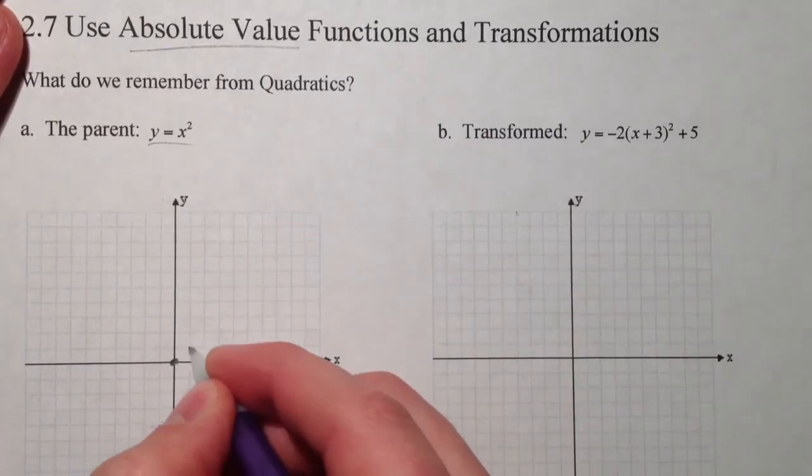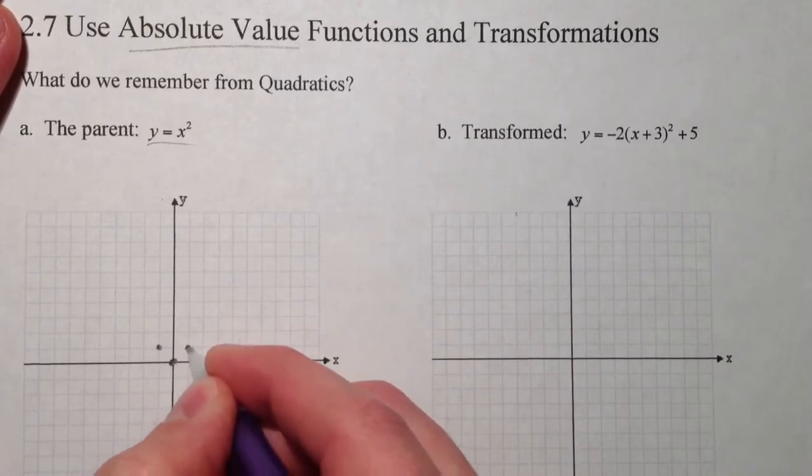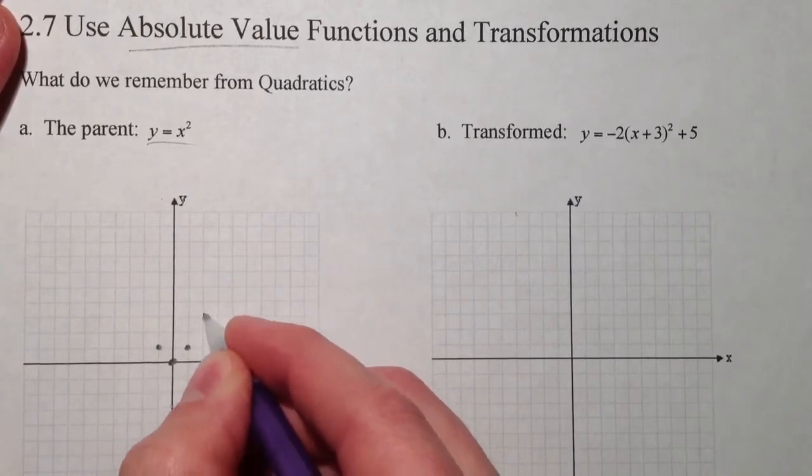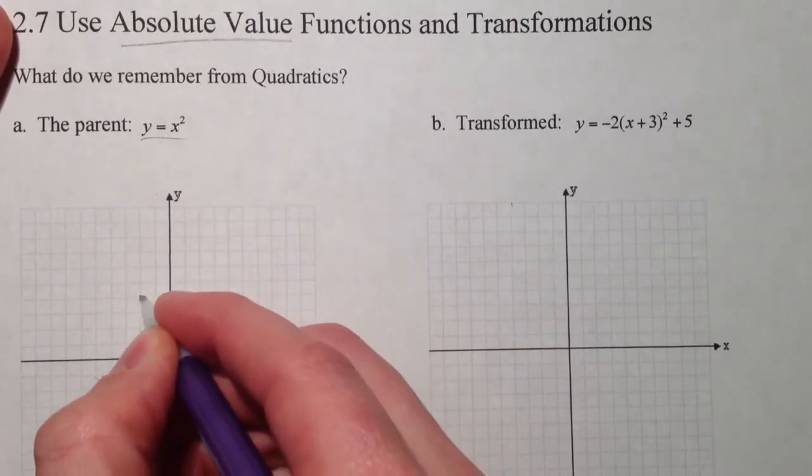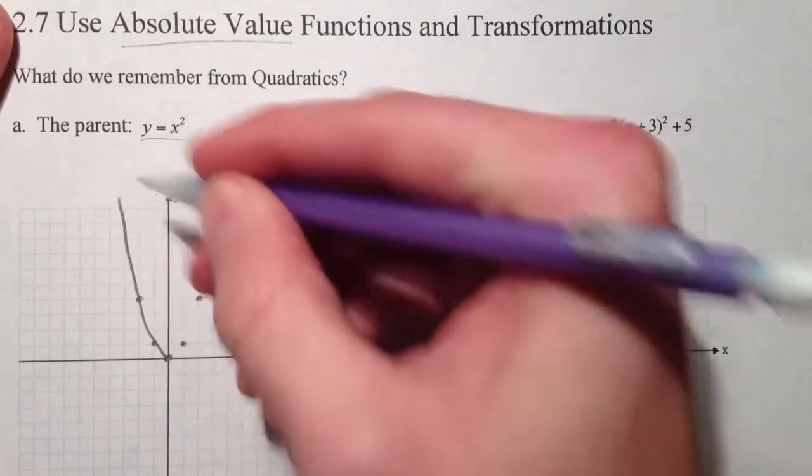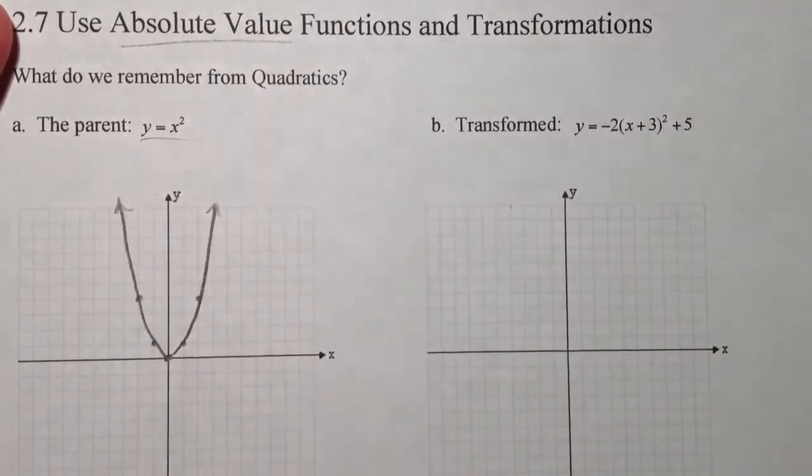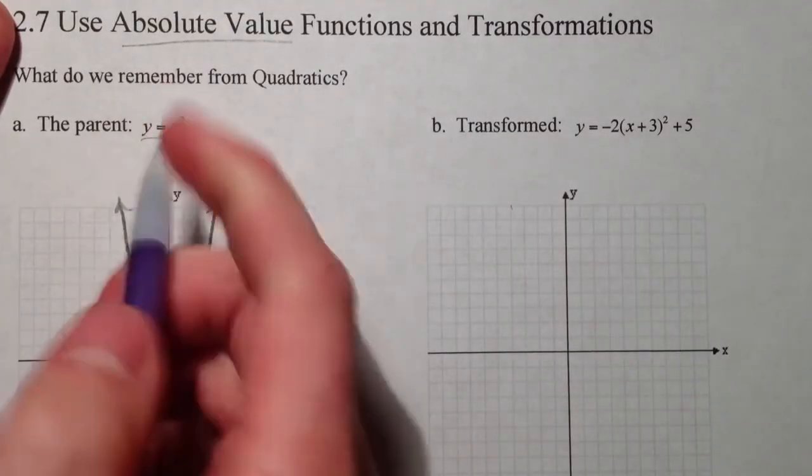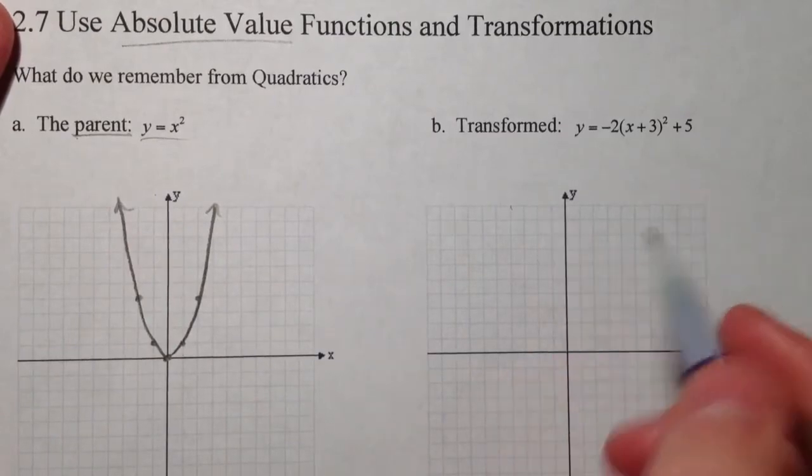So if you remember, 0 squared is 0, 1 squared is 1, negative 1 squared is 1, 2 squared is 4, and negative 2 squared is 4, and so our parabola had a general shape of this. And so we plotted points for the original one, and we called that the parent graph. And then from there, everything else is transformed.